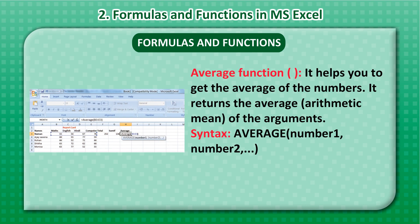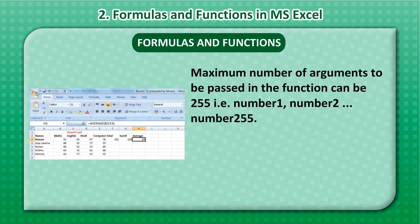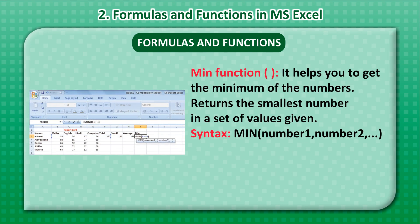The Average function helps you to get the average of numbers. It returns the average arithmetic mean of the arguments. Syntax: AVERAGE(Number1, Number2, ...). The maximum number of arguments to be passed in the function can be 255, that is, Number1, Number2, through Number255. Now, drag the handle of cells.